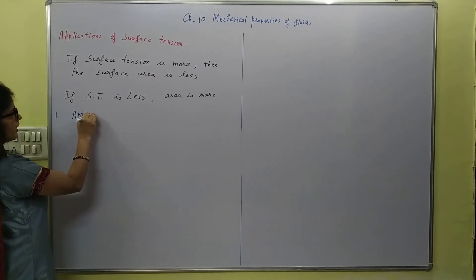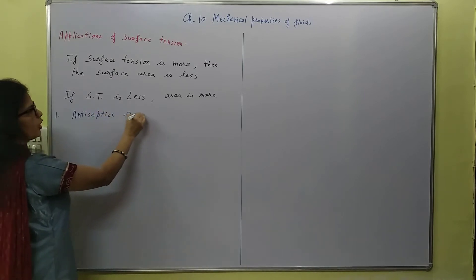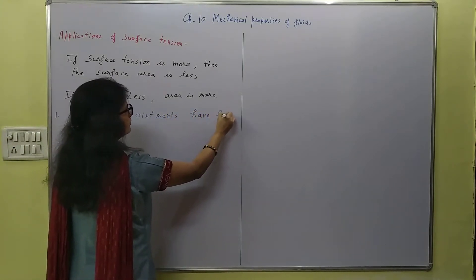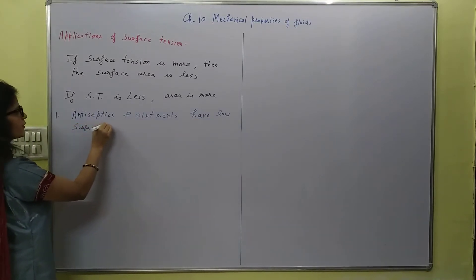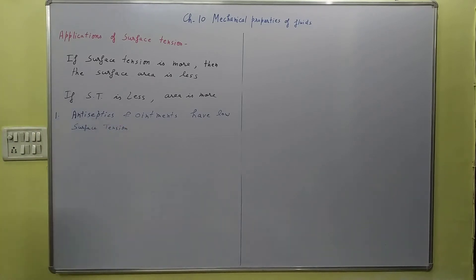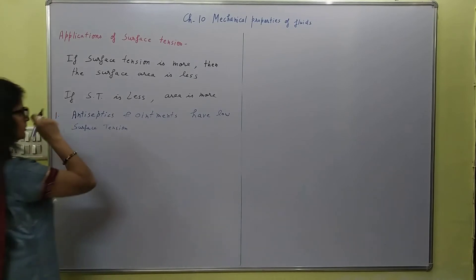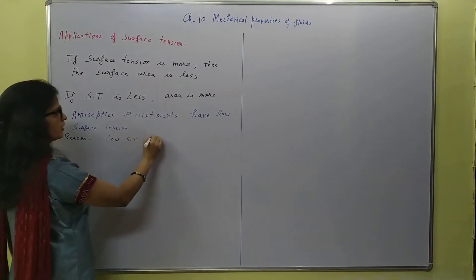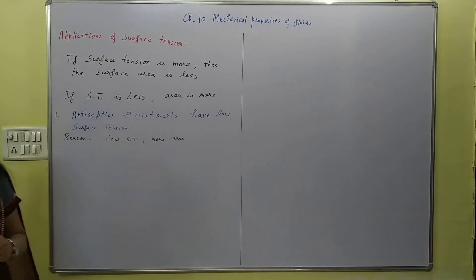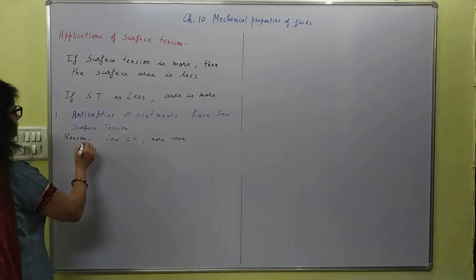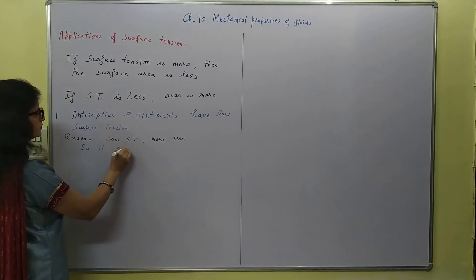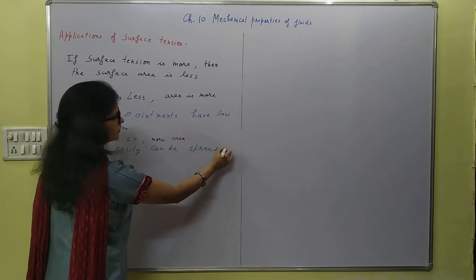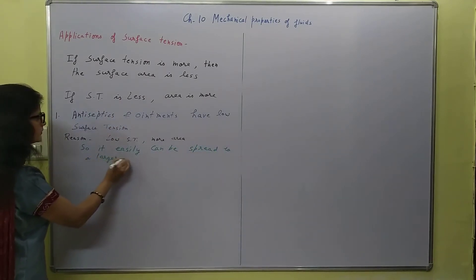So the first application: antiseptics and ointments have low surface tension. The reason being that due to low surface tension, it can spread to a larger area.